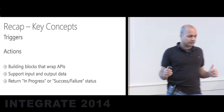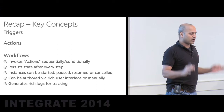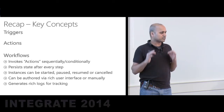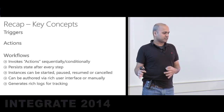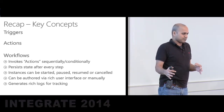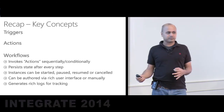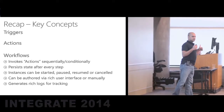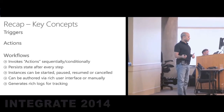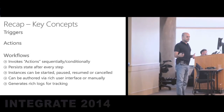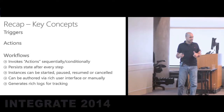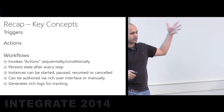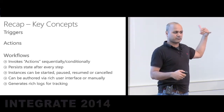A workflow is different from a trigger — triggers start a workflow, while workflows are a series of actions invoked sequentially or conditionally. They persist state at every step, and instances can be paused or resumed via the portal or APIs. A workflow definition is JSON, creatable via the browser-based UI, manually, or any tool that produces the correct JSON. Workflows also generate rich logs for tracking — at every step, recording what executed, how long it took, and the result.